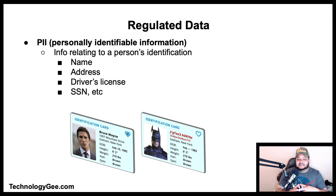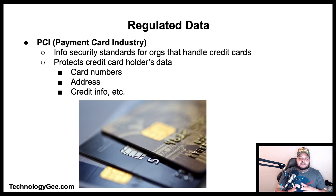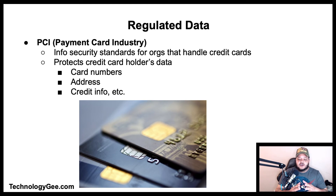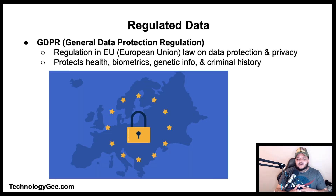PII, or Personally Identifiable Information, is information relating to an identifiable person such as their name, address, driver's license, or social security number. PCI stands for Payment Card Industry — this is a standard in which information security standards apply to organizations that handle branded credit cards from major credit card schemes, protecting cardholders' data such as card numbers, addresses, and credit information.